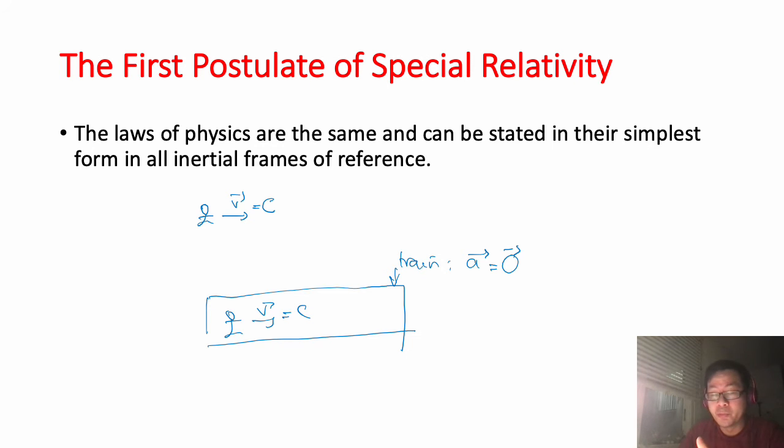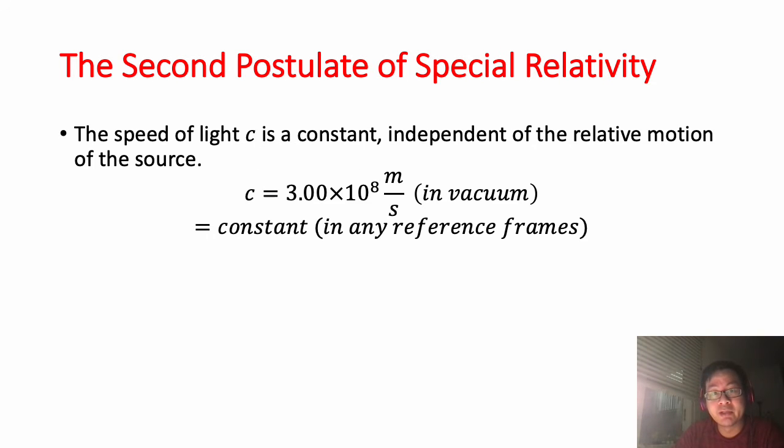Both things are the same if we know how to choose the good reference frame. The second postulate is: the speed of light in vacuum, denoted c, is constant, independent of the relative motion of the source. The second postulate is special because if the speed of light is constant but doesn't depend on any reference frame, in any reference frame the speed of light always equals 3×10⁸ meters per second. It means if light is in vacuum, the speed of light equals c.